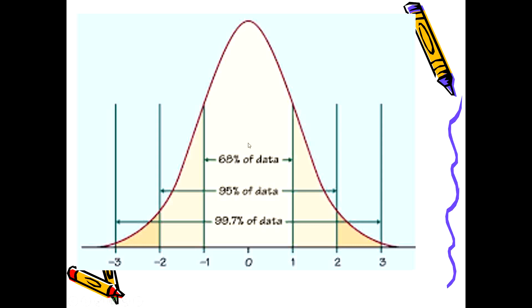This is the normal distribution curve. It is bell-shaped, smooth, and symmetrical. Ideally, the tapering tails should never touch the baseline. The mean, median, and mode lie in the center and are always equal to zero. Plus minus one standard deviation covers 68% of the data, plus minus two standard deviations covers 95%, and plus minus three standard deviations covers 99.7% of the data.